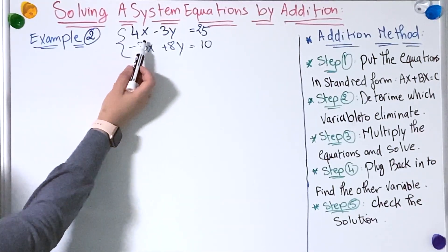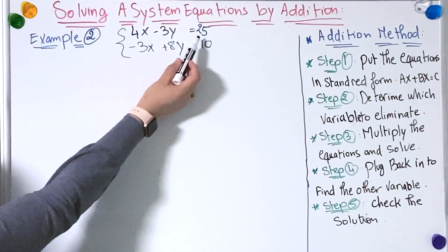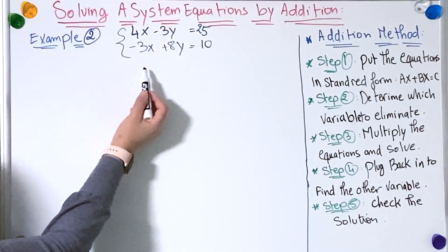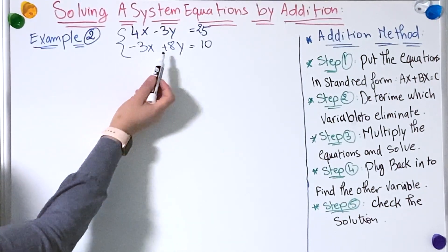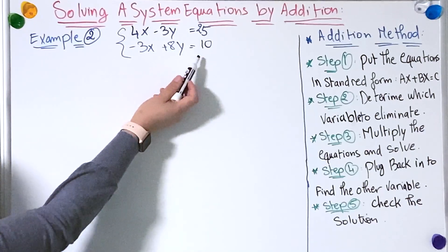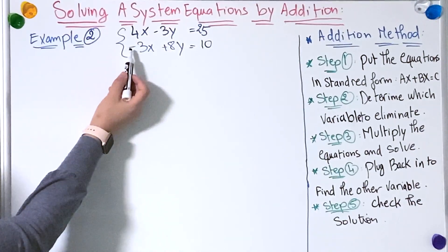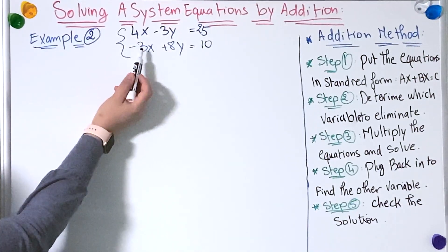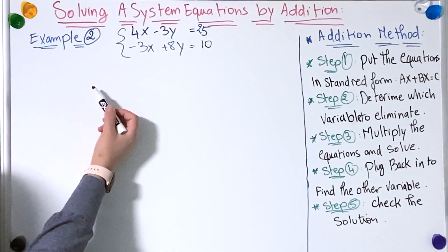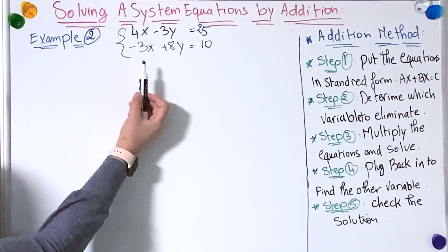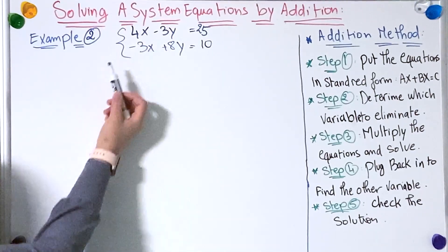Let's move to a different example. We have the first equation 4x minus 3y equals 25, and the second one minus 3x plus 8y equals 10. Both equations are in standard form.